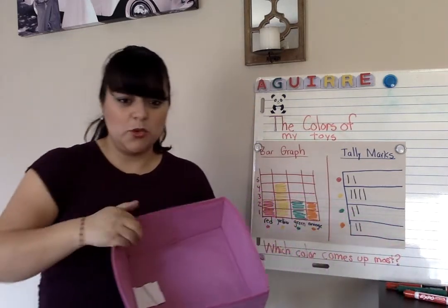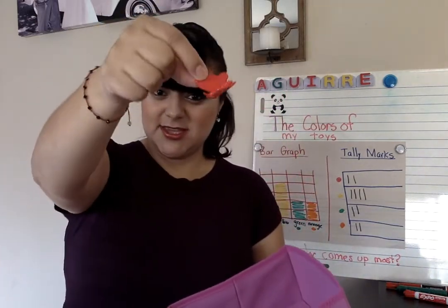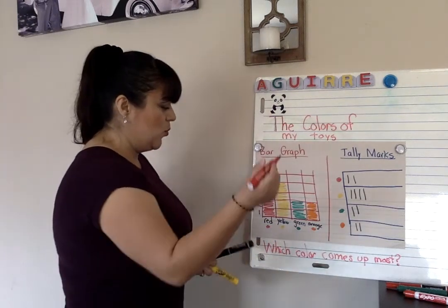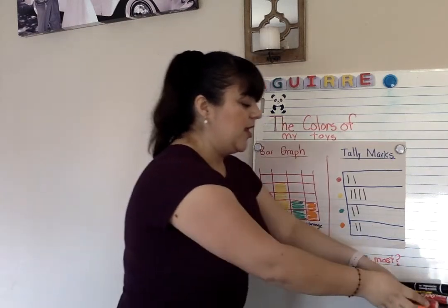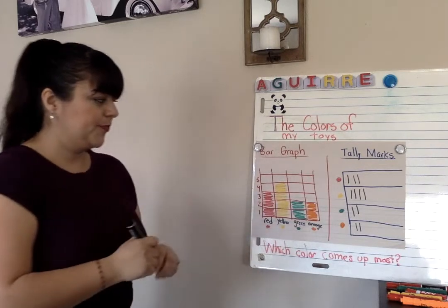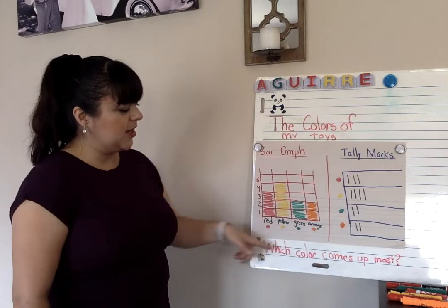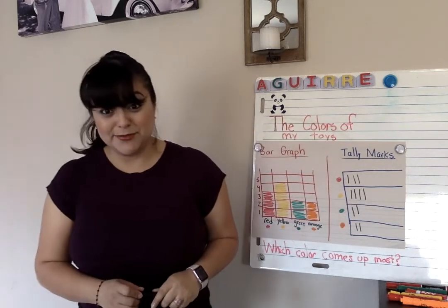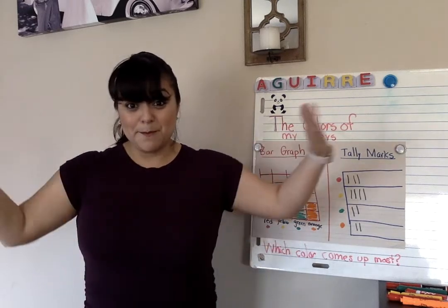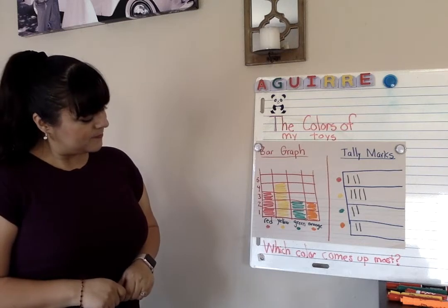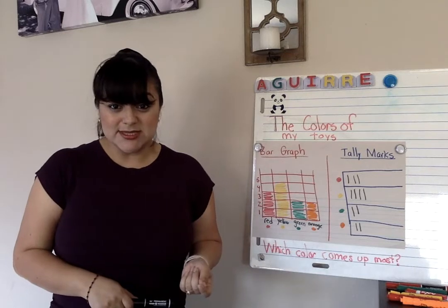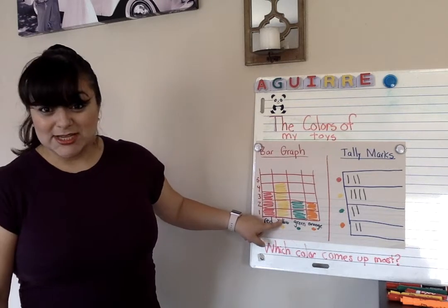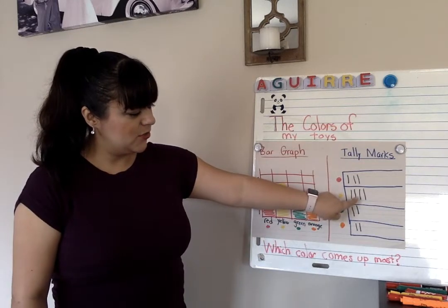We have just one more toy left — and this is a red butterfly. We use these to count. So let me color in one more red square on the bar graph and our last tally mark. Now that we're looking at the bar graph and tally marks for the colors of our toys, which color came up the most? Yellow! How many yellow toys were in the box? One, two, three, four. And this information is the same in the tally marks: one, two, three, four.